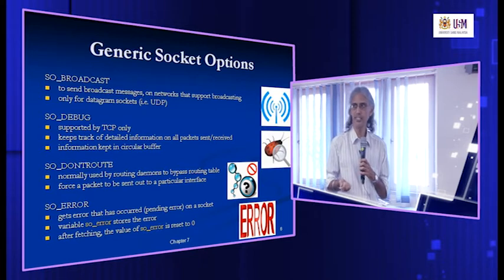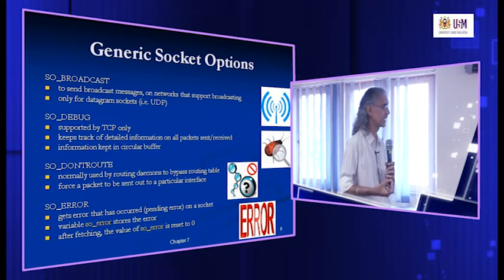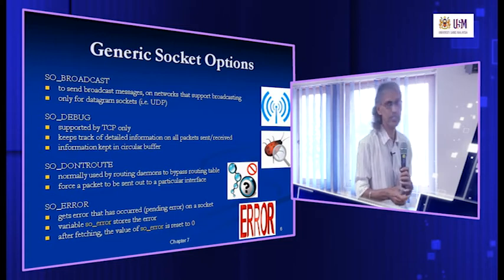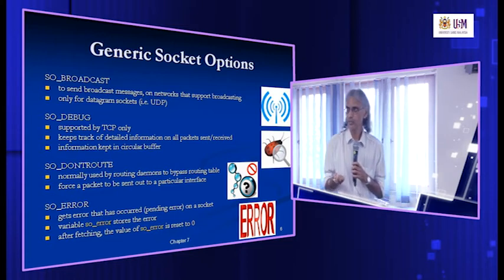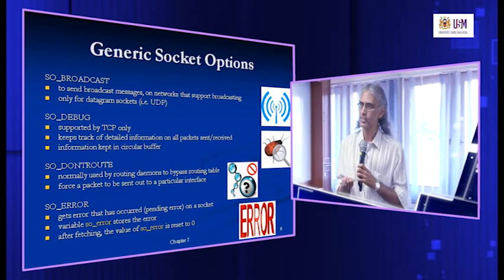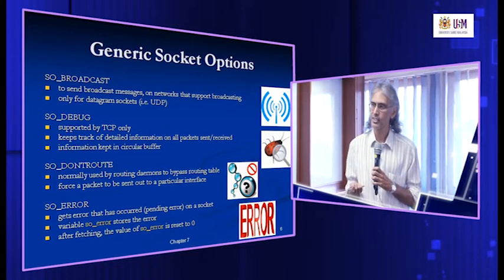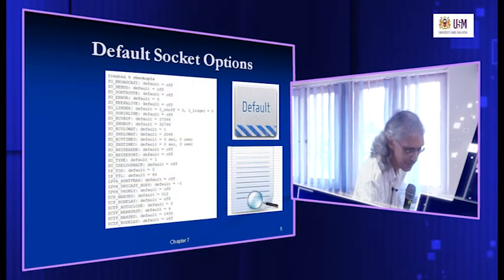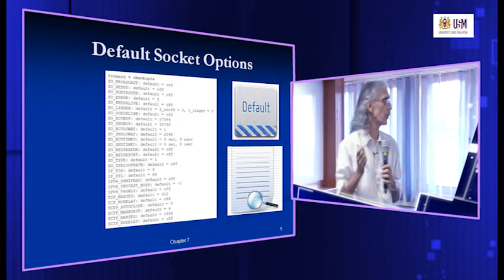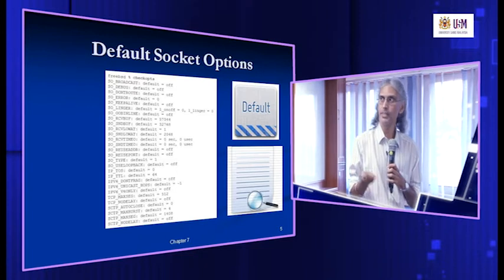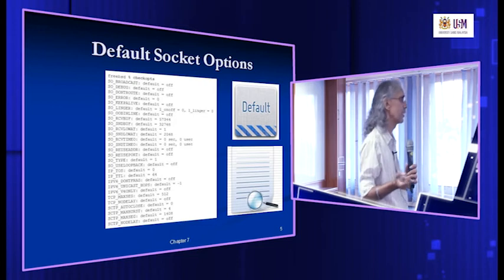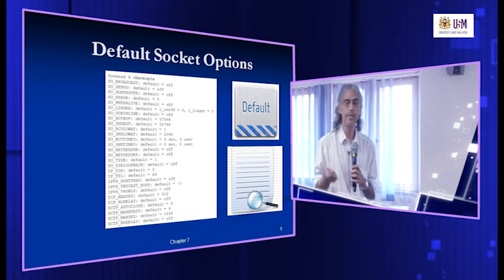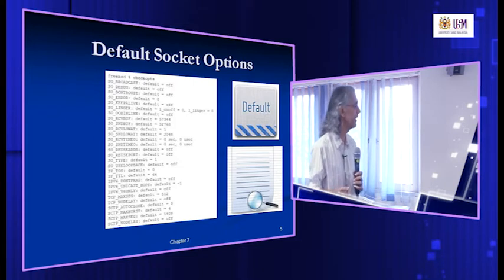The SO_ERROR option lets you obtain the current error that occurred on the socket. When an error happens, you can read what error just occurred. This option stores the error value, and once the error has been fetched, the value resets to zero. By default, error is zero, meaning no error. If an error happens, this value changes to a number corresponding to the error type. Once you fetch it, the value reverts back to zero to indicate it has been cleared.